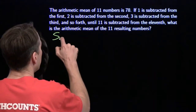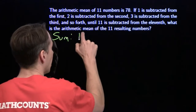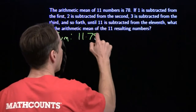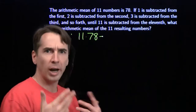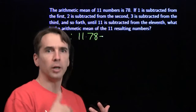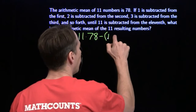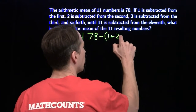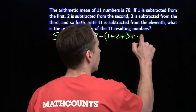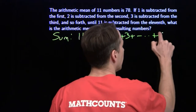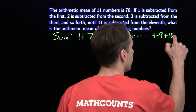Our new sum is our original sum — which is 11 times 78 — and then we subtract 1, 2, 3, 4, and so on. So we're subtracting the sum 1 plus 2 plus 3, all the way up to 9, 10, and 11.